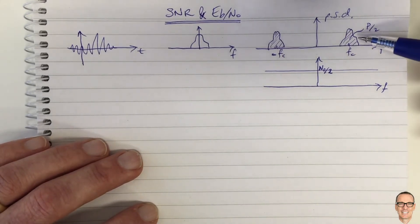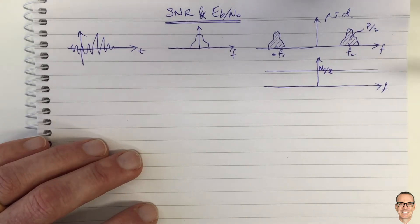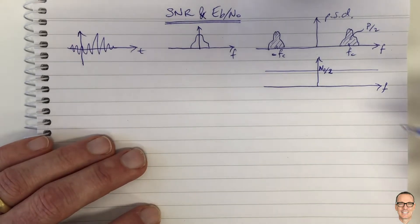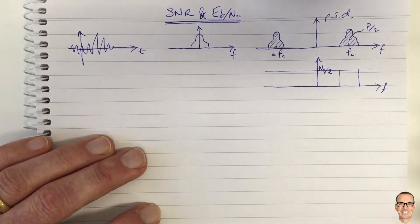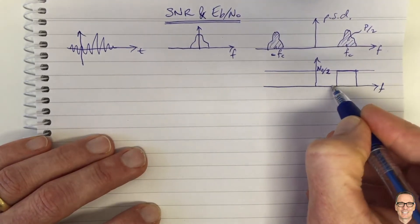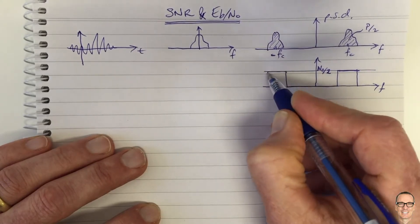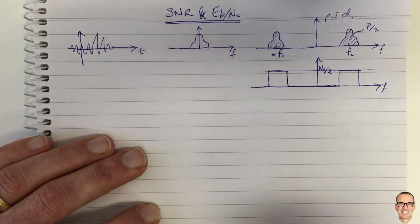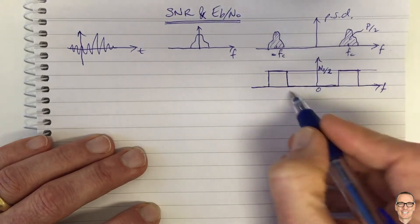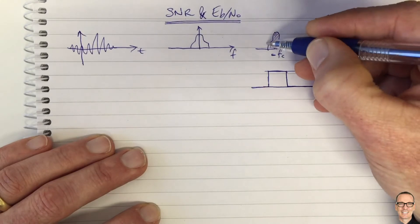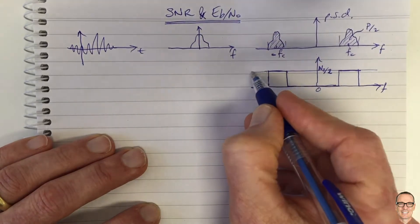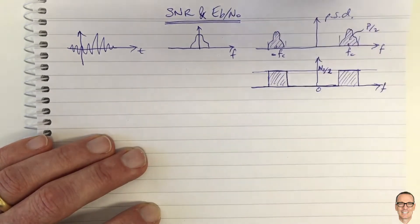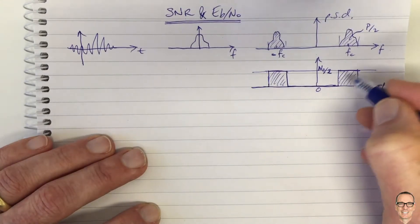So if we receive the signal — which is the transmitted signal plus noise from our receiver amplifier — the first thing we're going to do is apply a bandpass filter. In the frequency domain, that means multiplying by a bandpass filter, which has the effect of zeroing out all the frequencies not contained in our signal. This gets rid of all the noise at other frequencies.